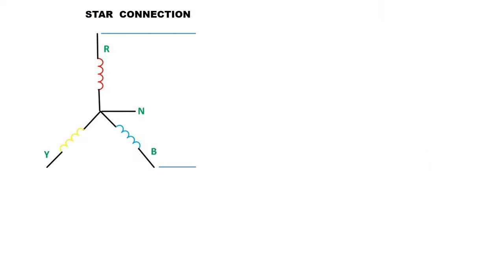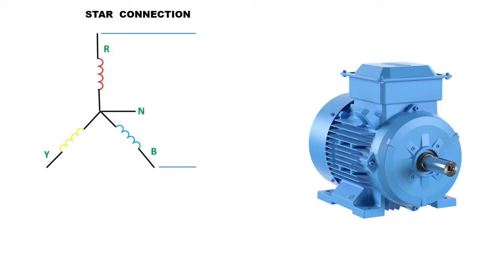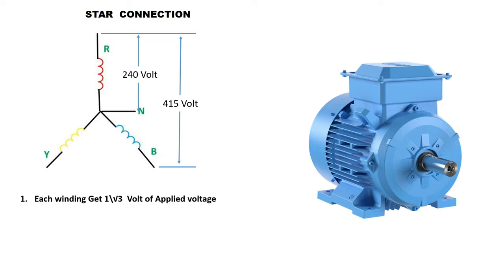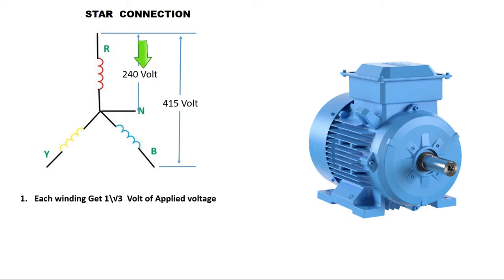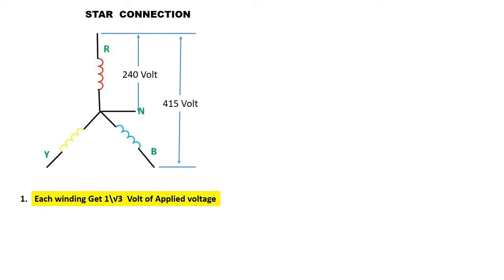If you connected your motor in star, then keep one thing in mind — to the winding of motor, you are giving only 240 volt power supply. The three phase power supply you connected has voltage 415 volt, but to one winding, voltage provided is only 240 volt. It means the motor winding is getting 1/root 3 of line-to-line voltage. Like in this picture you can see, between R phase and B phase voltage is 415 volt, but the R phase winding is getting only 240 volt power supply. Reason behind this is, we connected motor winding in star — on connecting in star, the center point will work as neutral. So if I measure voltage on both ends of R phase winding, I will only get 230 to 240 volt.